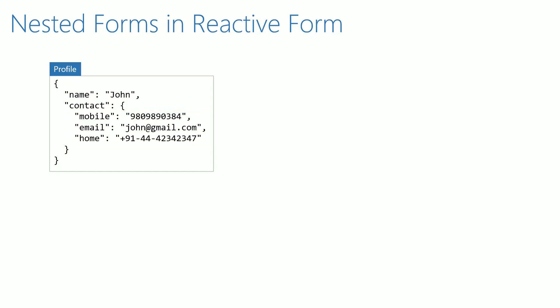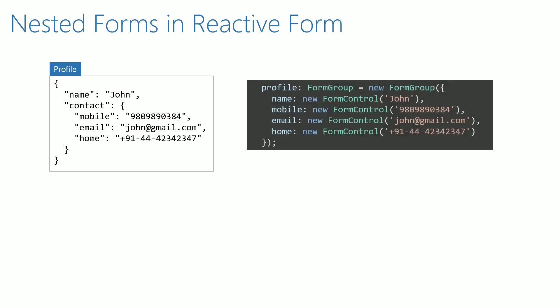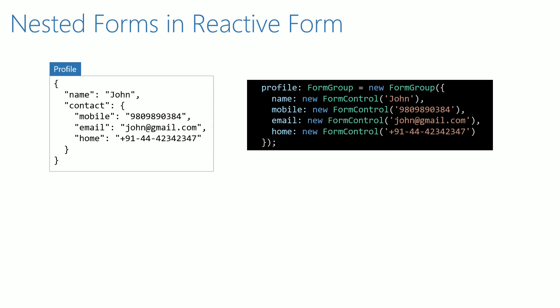Let us assume that we have to build a reactive form based on this data model. This can be a sample code snippet that defines the form group object having four form control objects for name, mobile, email, and home.